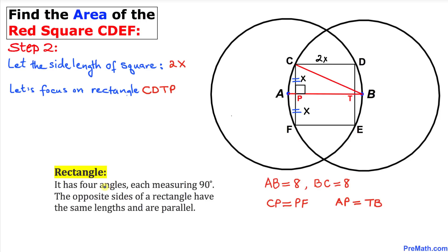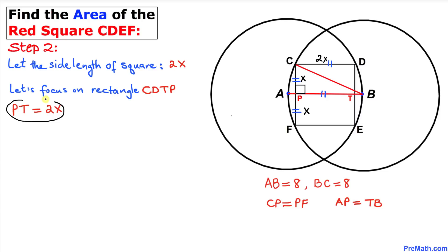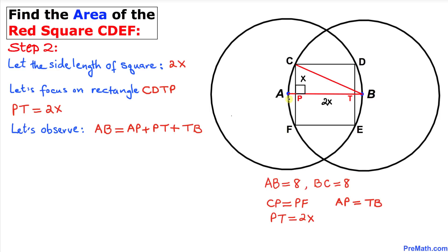By the definition of a rectangle, it has four angles each measuring 90 degrees, and opposite sides have the same length and are parallel. Therefore line segment CD equals line segment PT, so PT = 2x. Now let's observe that line segment AB equals AP plus PT plus TB, and we know AB = 8.